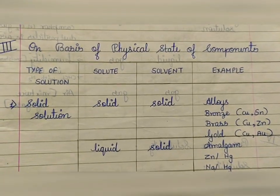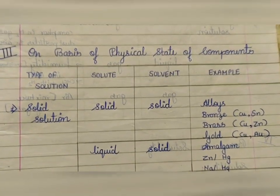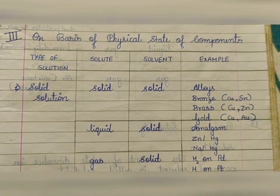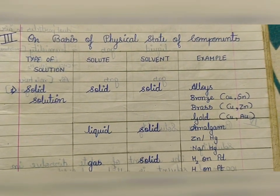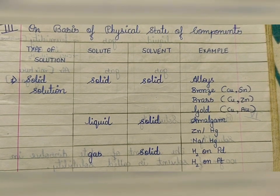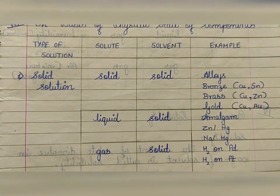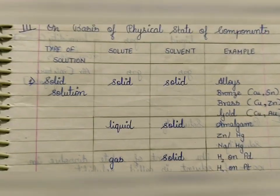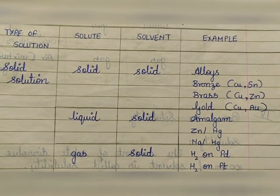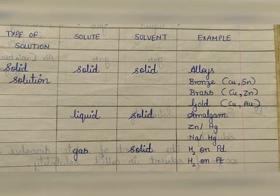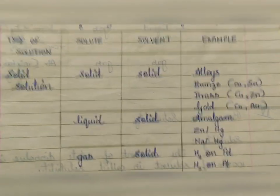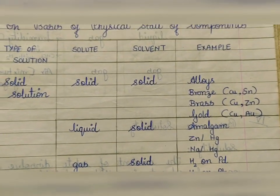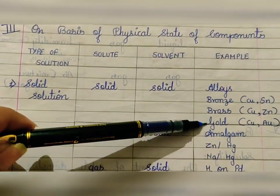The third classification is on the basis of the physical state of components — this is mentioned in your textbook. First: solid solution. As the physical state of the solution depends on the physical state of the solvent, a solid solution has a solid solvent. If both solute and solvent are solid, examples are alloys like brass, bronze, and gold.